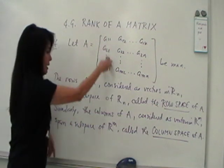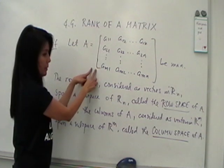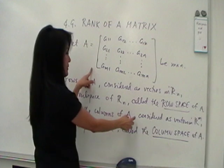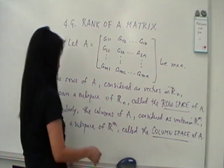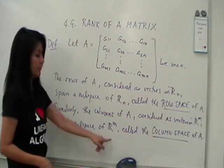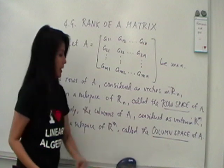Similarly, if you look at the columns of A, the columns of A will have m entries. So they will be considered now as vectors in R upper m. If you look at these vectors, they will span a subspace of R upper m, and we call that subspace the column space of A.